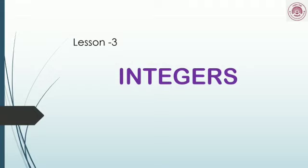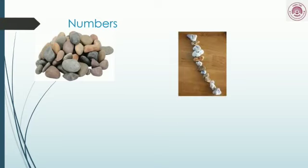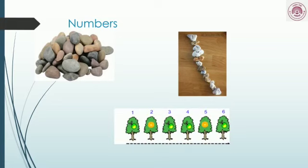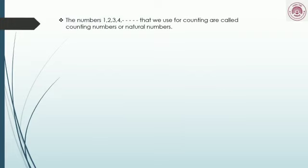Hello students, we now move on to the third chapter: Integers. Before I go over to integers, we will look at something else. I have some pebbles here — can you tell me how many pebbles there are? You can do that by counting them. Another example: you want to find out how many trees are in our school compound — we have to count them. Numbers were created because of the need to count things in nature. The numbers 1, 2, 3, 4 that we use for counting are called counting numbers or natural numbers.